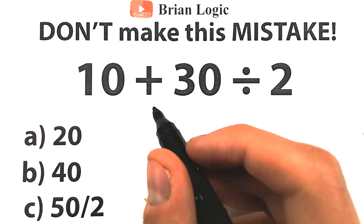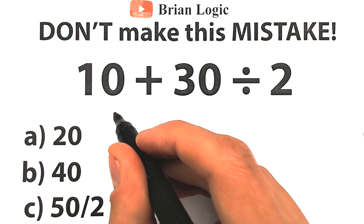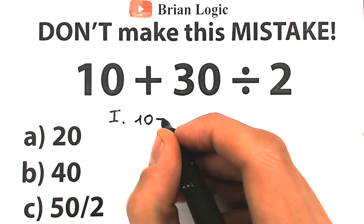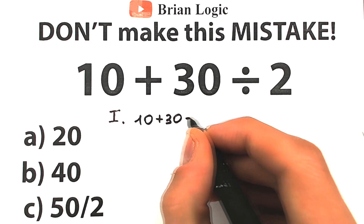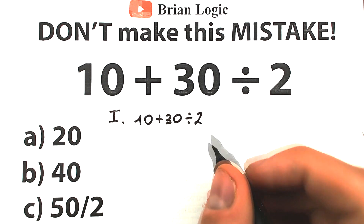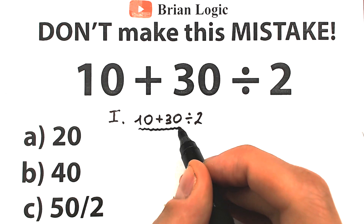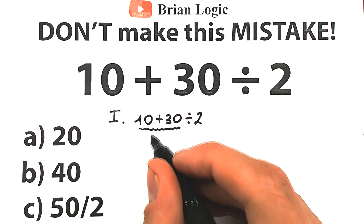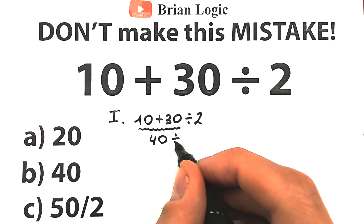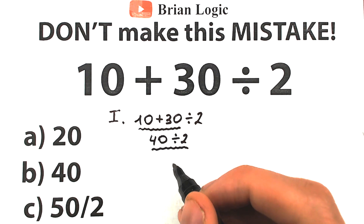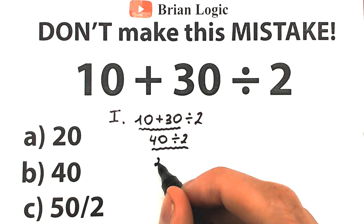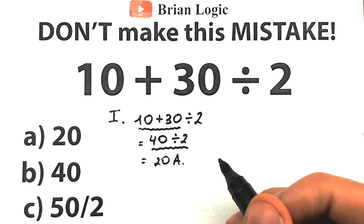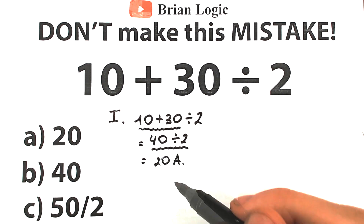So there are two types of people. The first type of people solve this question like this — this is the first interpretation. We have 10 plus 30 divided by 2. This type of people don't know about order of operations. They say: 10 plus 30, let's add it first from left to right. So 10 plus 30 equals 40, and then 40 divided by 2 gives an answer of 20. This is option A, and it looks like option A is the correct answer. This is the solution for the first type of people.